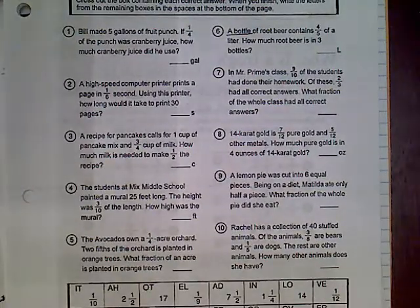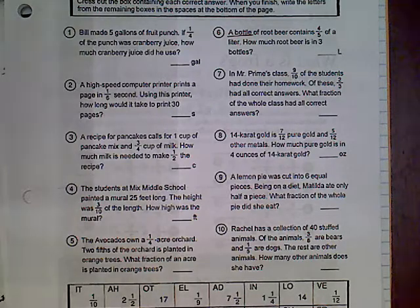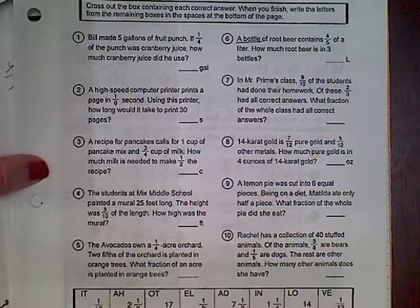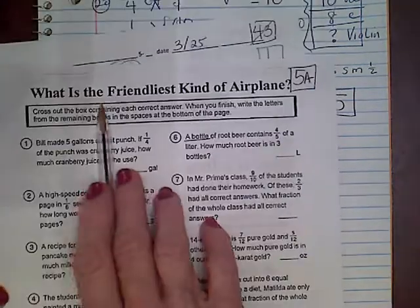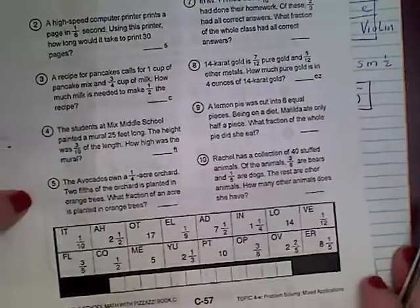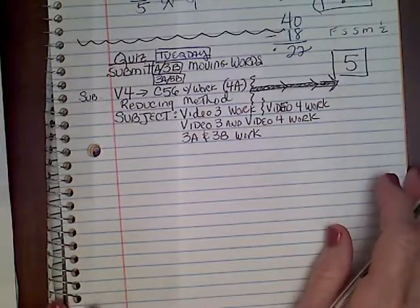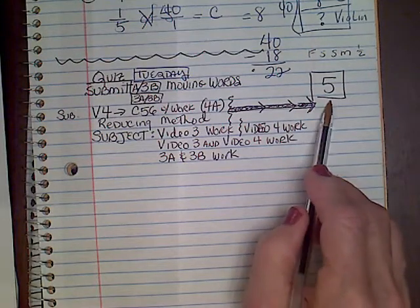So, let's see what we are going to do today. Today is going to be kind of short. Aren't you lucky? So, the first thing that we are going to start on is word problems. And one of the keys that you need to know in this is that generally, not all the time, but generally when you see the word of, it usually means multiply. In fact, we are going to do one that is very similar to one that we did last time. We are going to start with what is the friendliest kind of airplane? 5A. And it is going to be number 10.